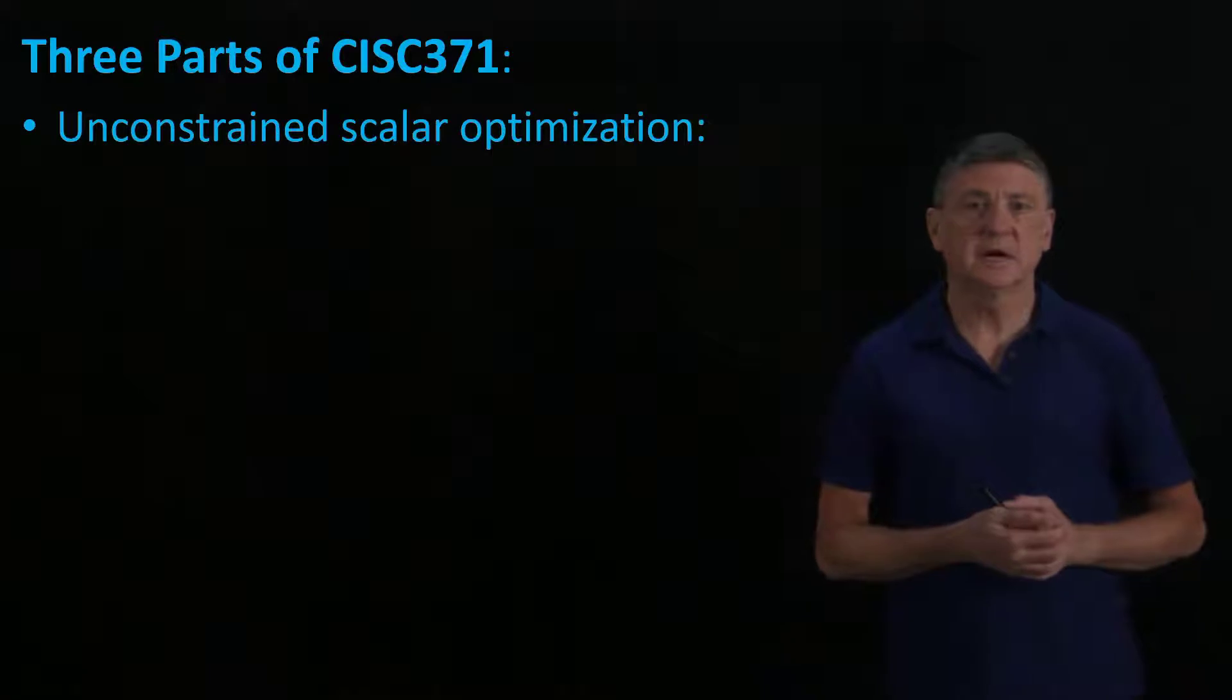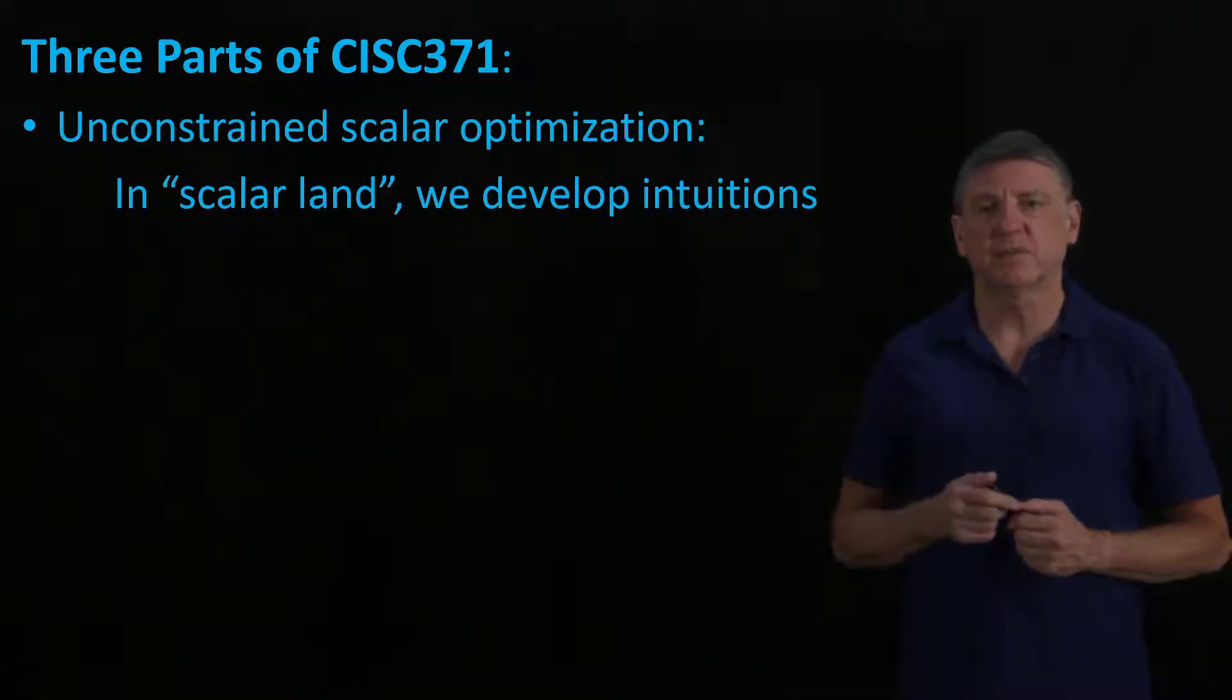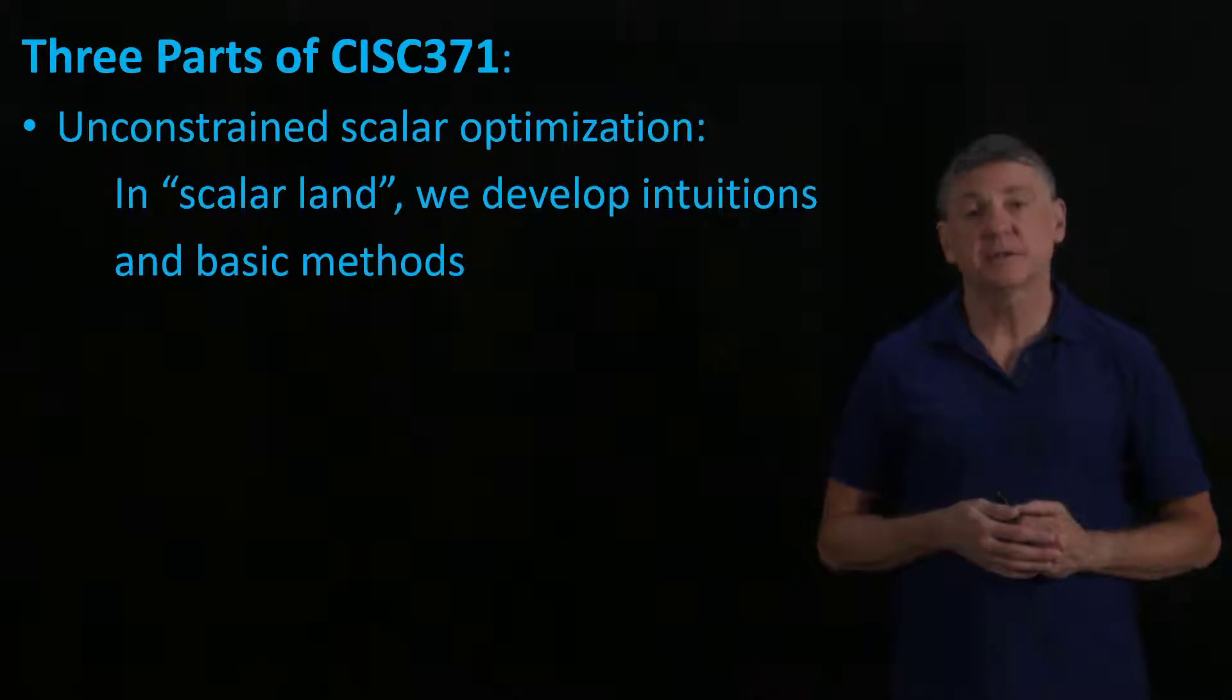There will be three parts to this course. The first part is unconstrained scalar optimization. This will be a function that has a single variable, and we'll colloquially call that scalar land. Here we're going to develop the intuitions and the basic methods that we need.